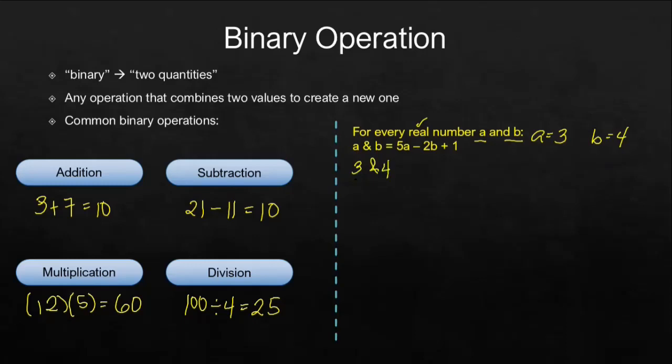3 here is the first number, which is originally represented by a. So 3 will take the position of a in the definition of the binary operation. So we have here 5 times 3 minus 2 times, b here is 4, so we have 2 times 4 plus 1.